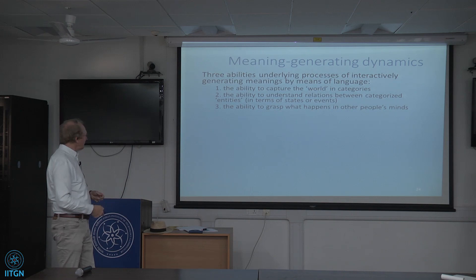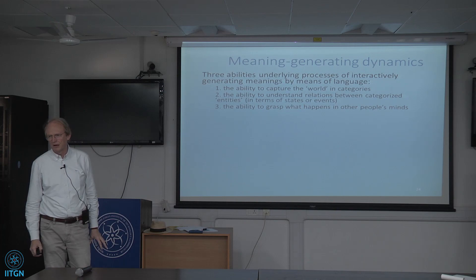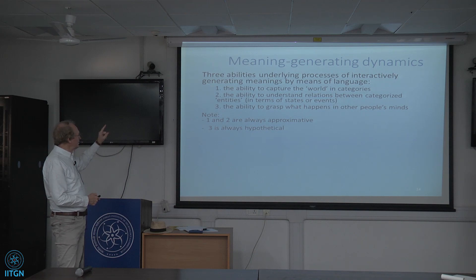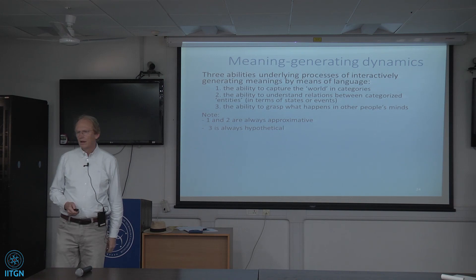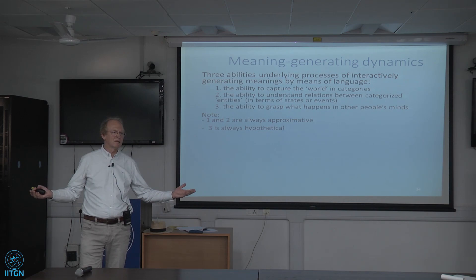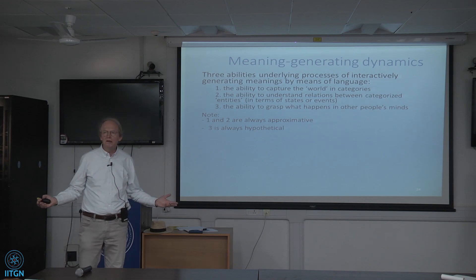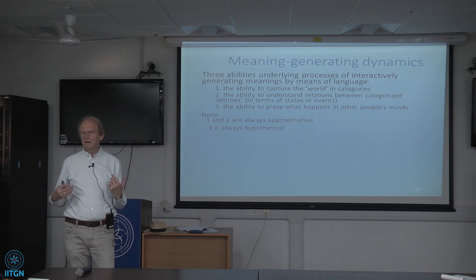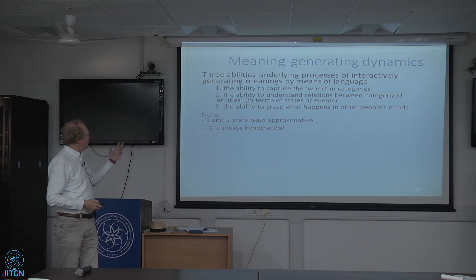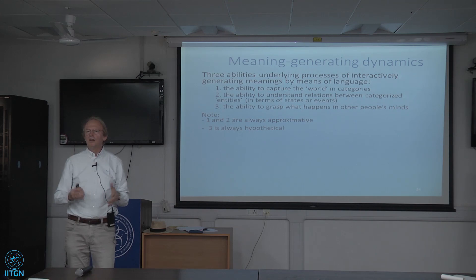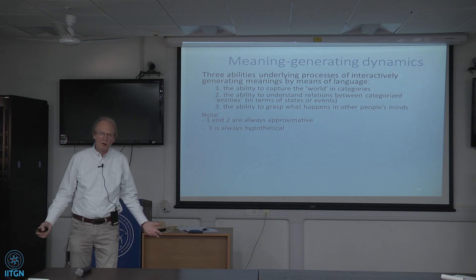Second, there is the ability to understand relations between categorized entities — for instance in terms of states or events — and that is where the whole grammatical apparatus developed in languages comes in. Third, there is the ability to grasp what happens in other people's minds, as I mentioned earlier. The problem is that abilities one and two are always approximative — our categorizations of the world can be vastly different, which is why lexical fields in different languages don't match each other at all.